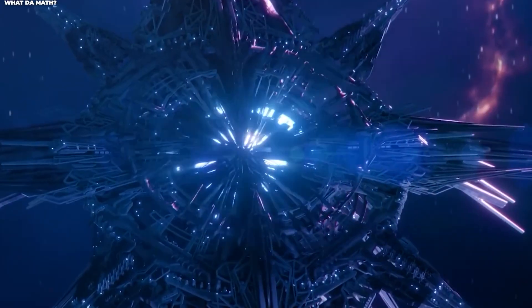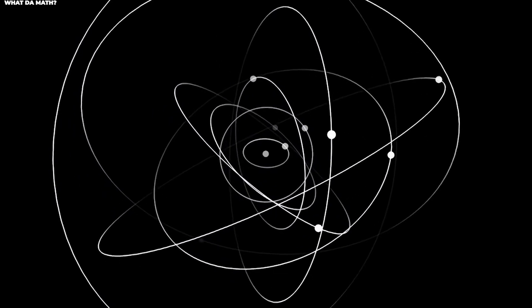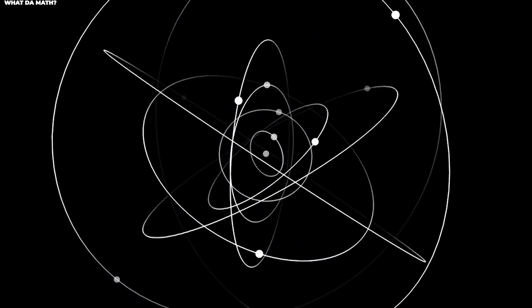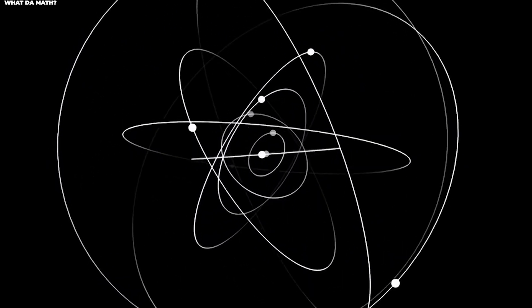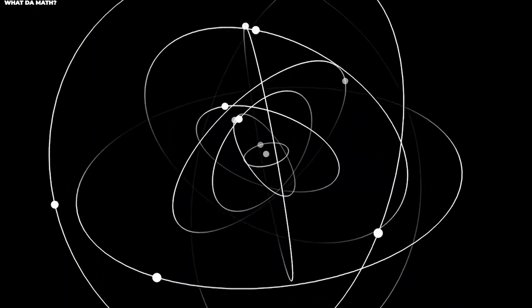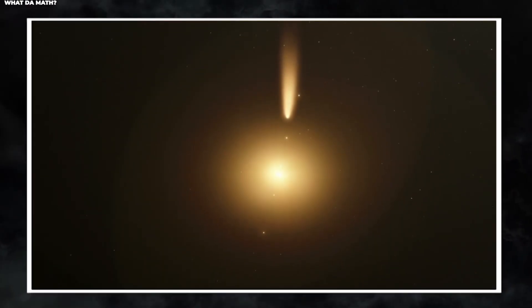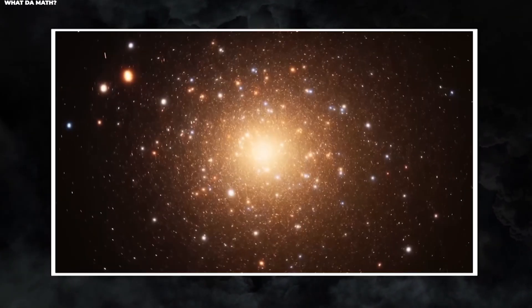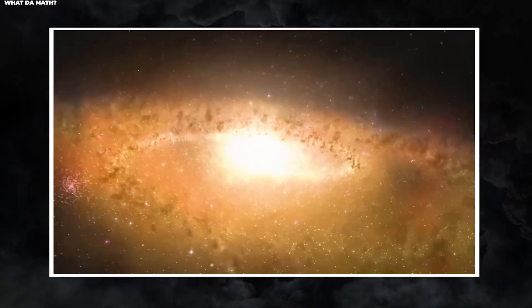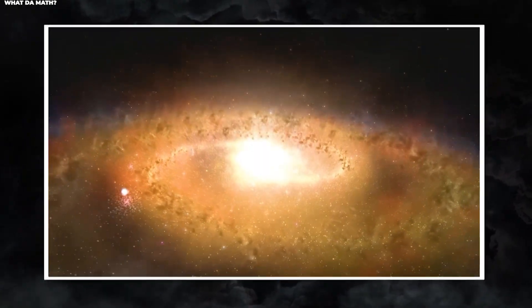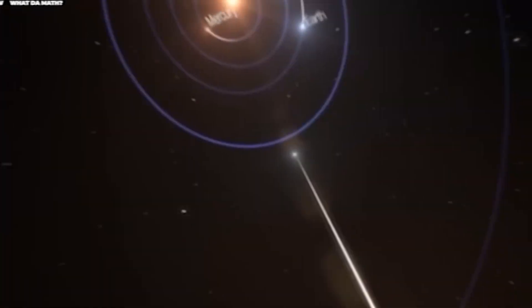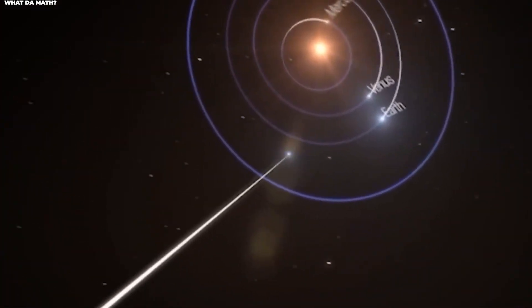An eccentricity of exactly 1.0 means the object is on a parabolic path and will never return. Anything above 1.0 means hyperbolic trajectory. Here's where it gets exciting. 3i-ATLAS had an orbital eccentricity significantly greater than 1.0. This means it wasn't bound by the sun's gravity.